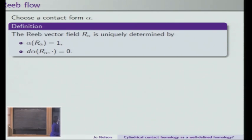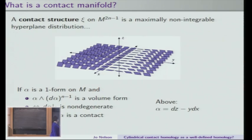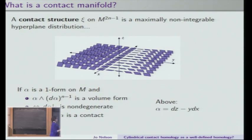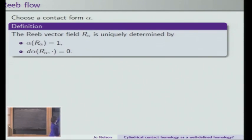Now that we have a contact form, associated to any contact form is a Reeb vector field. I briefly wanted to say that associated to a contact structure, you have many different one-forms that will define the same contact structure as their kernel — because if I take alpha and multiply it by anything positive, then the kernel of alpha and the kernel of that positive multiple are still the same contact distribution c. So in contact geometry, the only tools we have to understand what's going on come after we pick a contact form, because after we pick a contact form, we have this Reeb vector field that's uniquely determined by two equations.